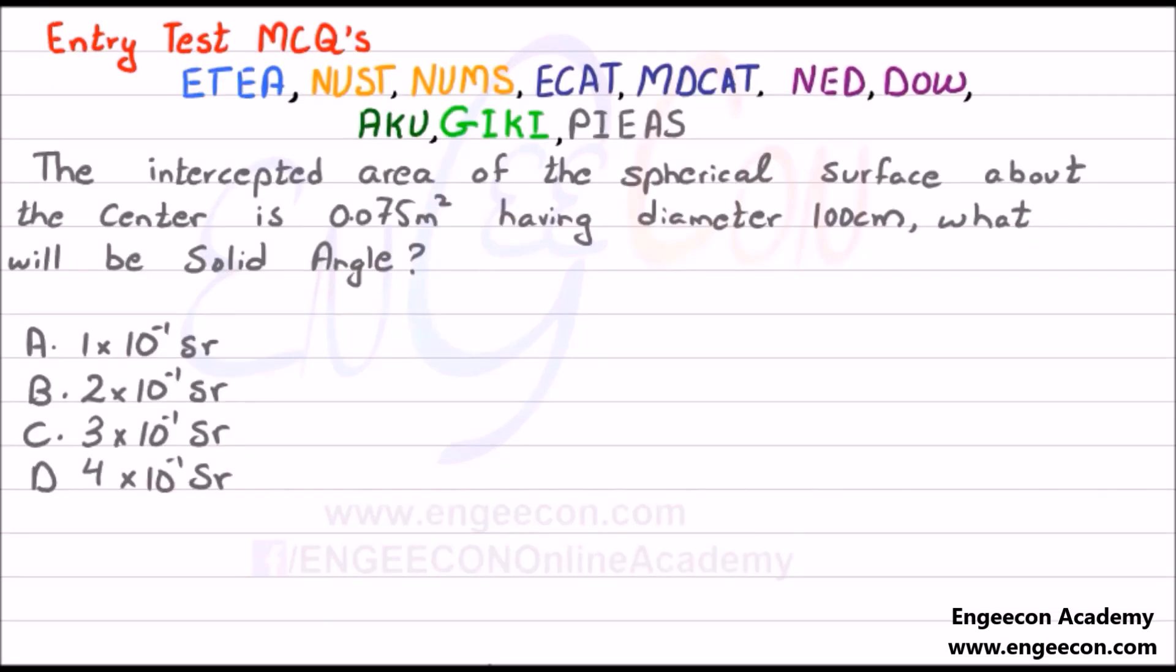Here we have entry test MCQs which are relevant to these entrance examinations, especially for ECAT, MDCAT, MCAT, NED, and DU. The intercepted area of the spherical surface about the center is 0.075 m². Having diameter is equal to 100 cm, what will be the solid angle?